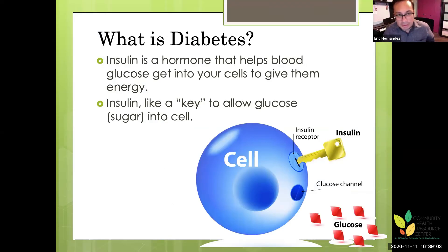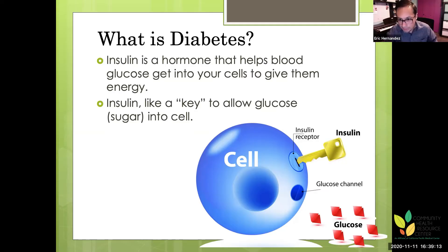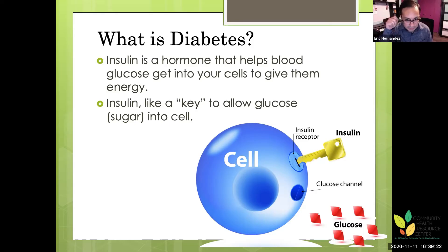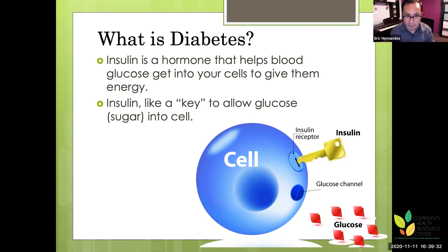Insulin is the hormone that opens the cell like a key so that sugar in your blood can enter the cell. When we have sugar in the blood, we produce insulin, it opens the door, and the sugar goes into the cell — where it's either burned for fuel or stored as fat. Either way, it's no longer in the blood and blood sugar is normalized.